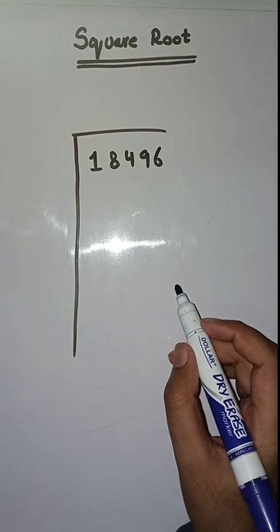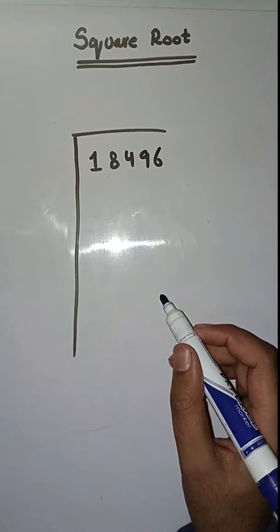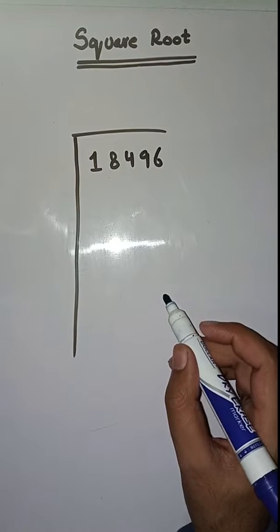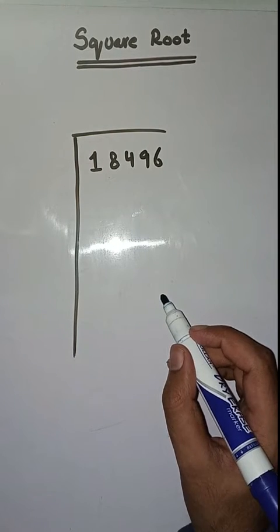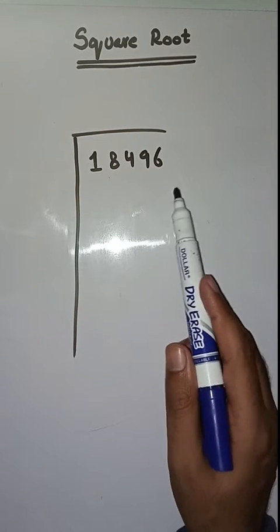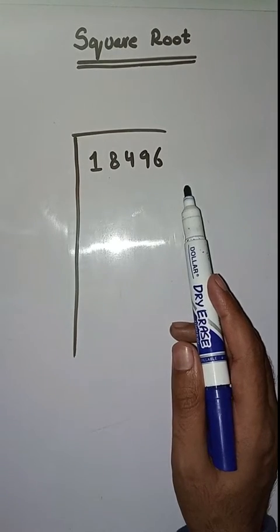Hello students, hope you all are fine. Welcome to my channel. Today we will learn how to find square root. We have to find square root of 18,496. So first step is we have to make pairs.